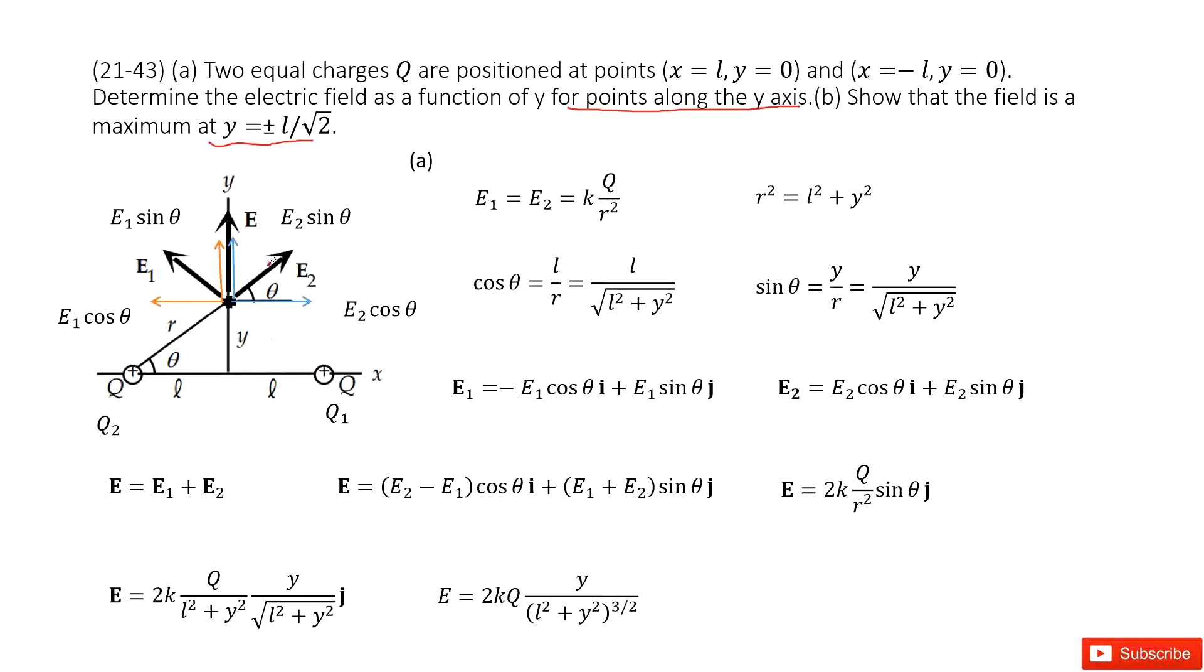We look at this system. First of all, we need to consider the electric field at this position, where x equals 0, y equals y. So this side length is y. The electric field at this position comes from E1 and E2. This is addition for two vectors E1 and E2 to get E.